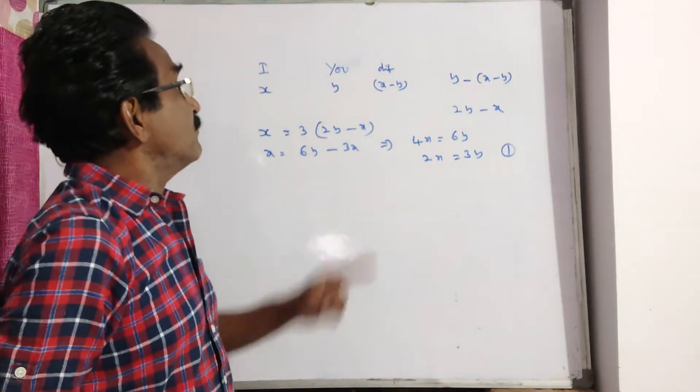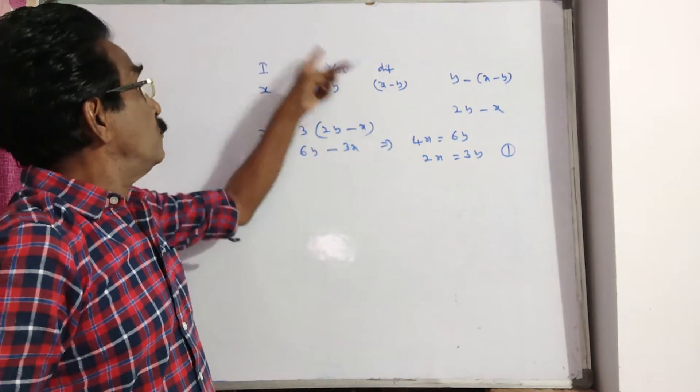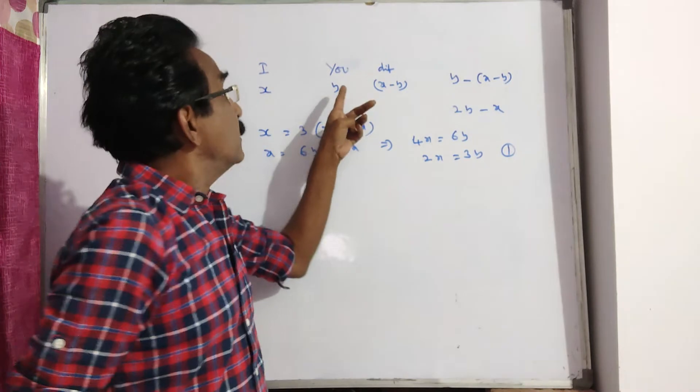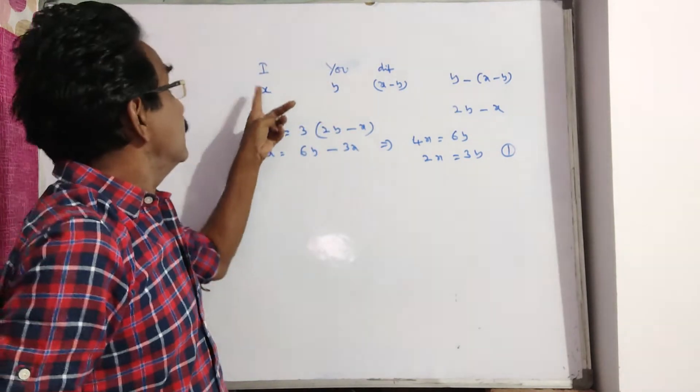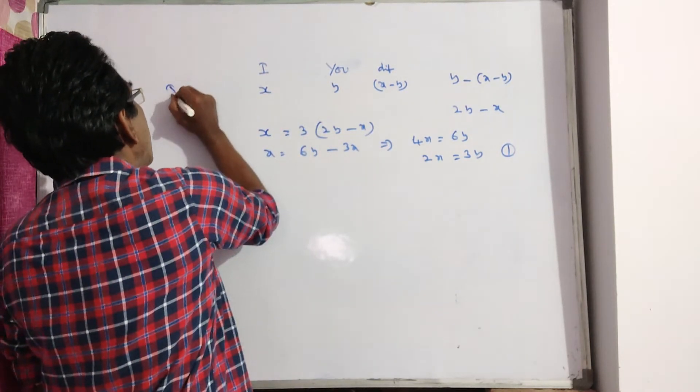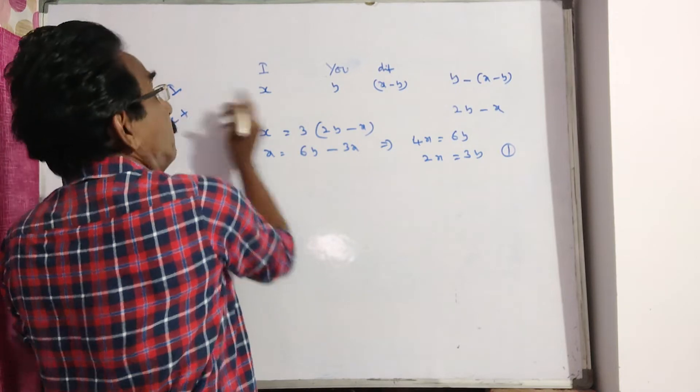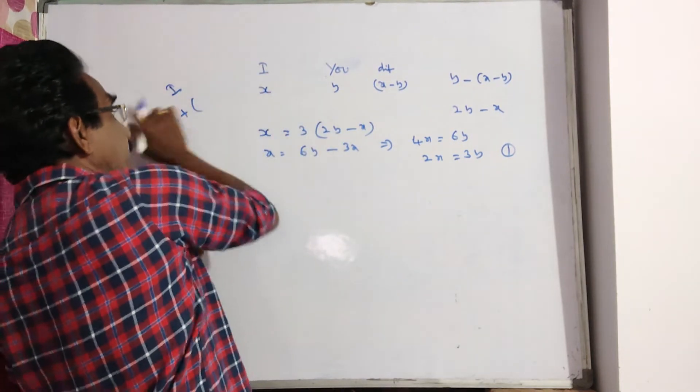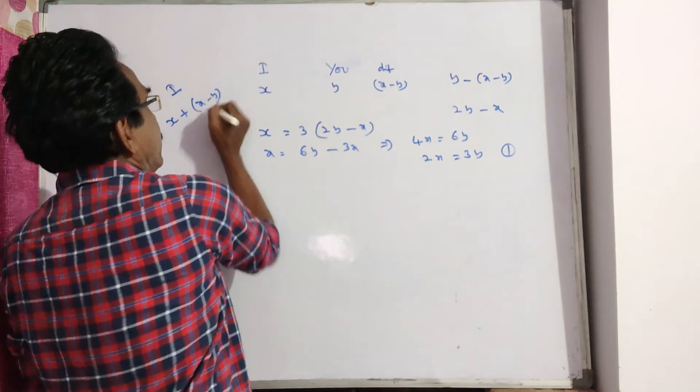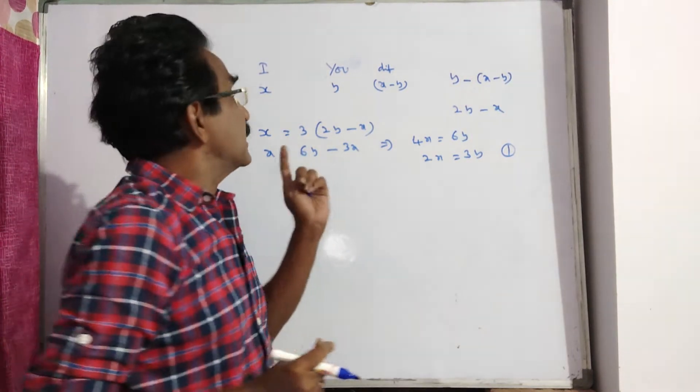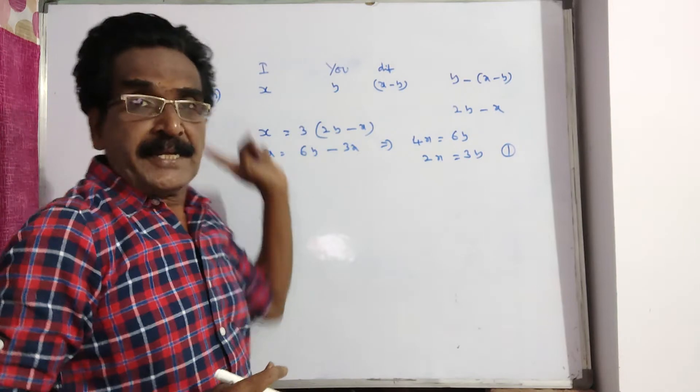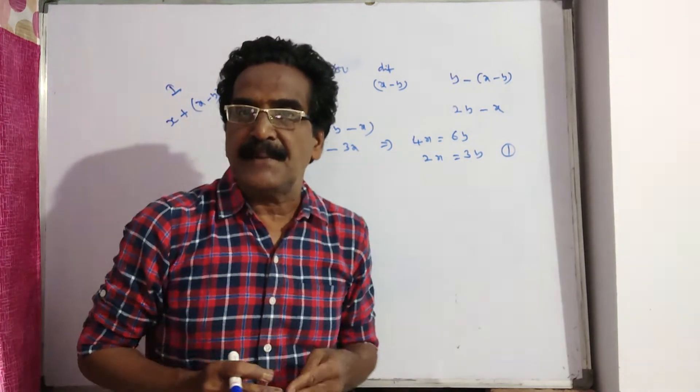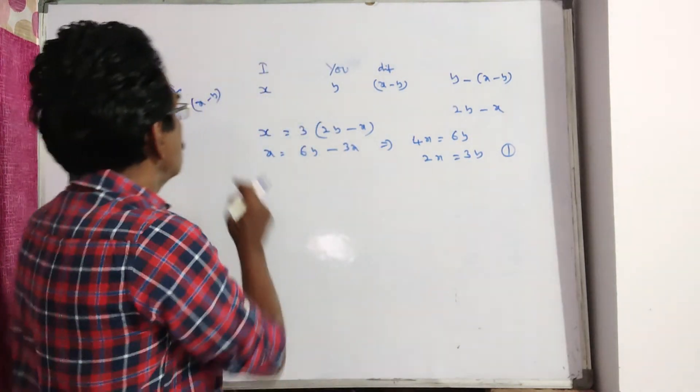And now, the second equation is, when you got to be my age, then I will be X plus X minus Y. Now, it is given that when you got to be my age, the sum of our ages will be 84.